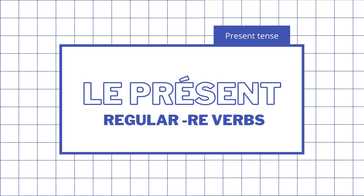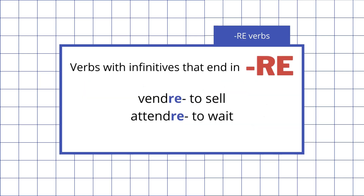Bonjour à tous! In this video, we will learn how to conjugate RE verbs into present tense. RE verbs are verbs with infinitives that end in RE. So for example, vendre, to sell, and attendre, to wait, are both RE verbs because they end in RE.